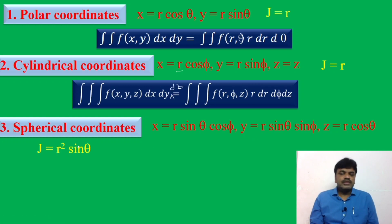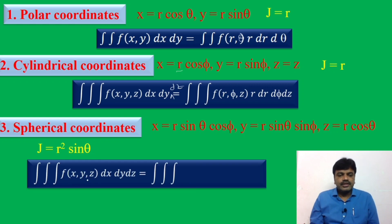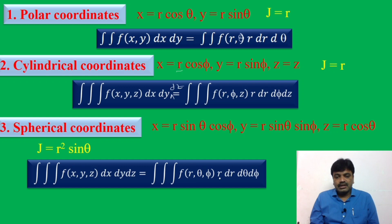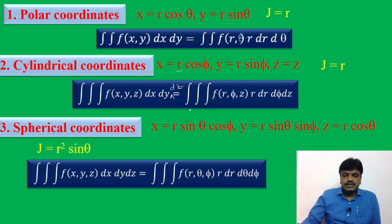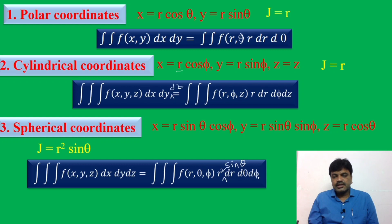In spherical polar coordinates, the Jacobian is r² sinθ. So ∭f(x,y,z) dx dy dz = ∭f(r, θ, φ) r² sinθ dr dθ dφ. This covers change of variables in double integration, triple integration, and the standard forms: polar, cylindrical polar, and spherical polar coordinates.